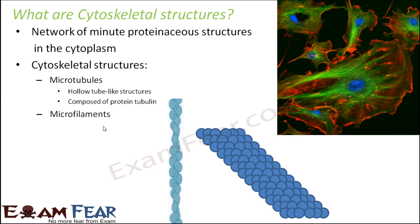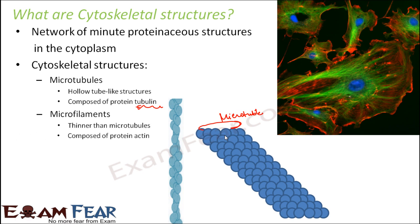Microtubules are hollow tube-like structures composed of the protein tubulin. They look like a cylindrical structure and act as the pillars of the bridge, giving basic support. Microfilaments are very thin when compared to microtubules and are composed of the protein actin. These two structures together form the cytoskeleton.